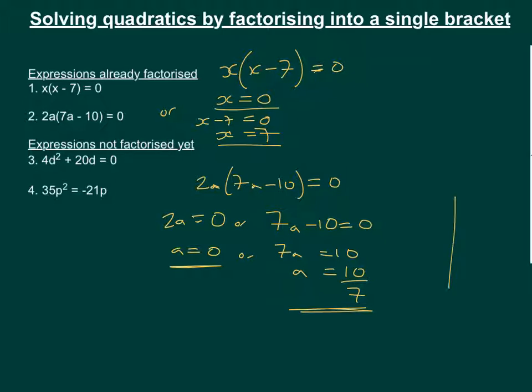So for this one, if I was to sketch at this time, it would cross at 0 and at 10 sevenths. And that's what it would kind of look like, although it doesn't tell us information about where this turning point is or how steep these lines are or any other kind of information.